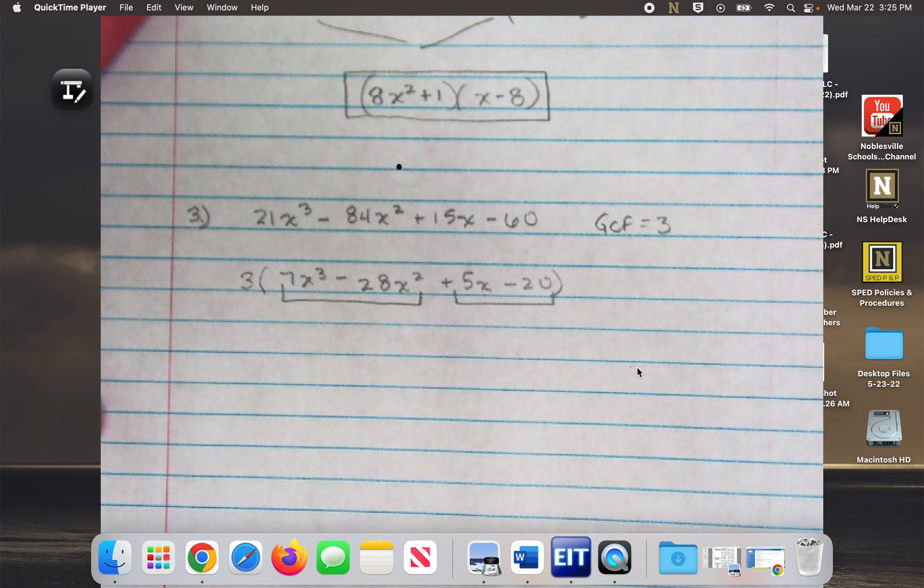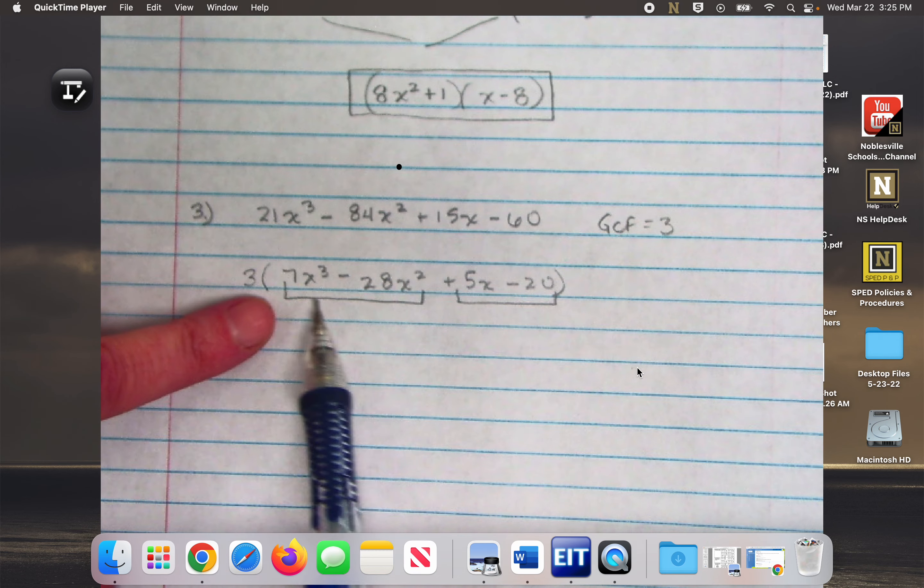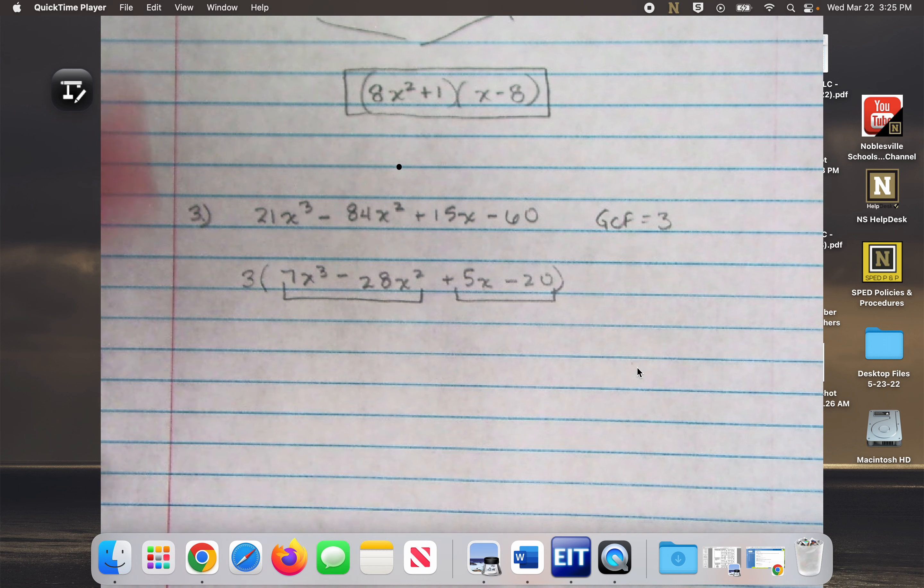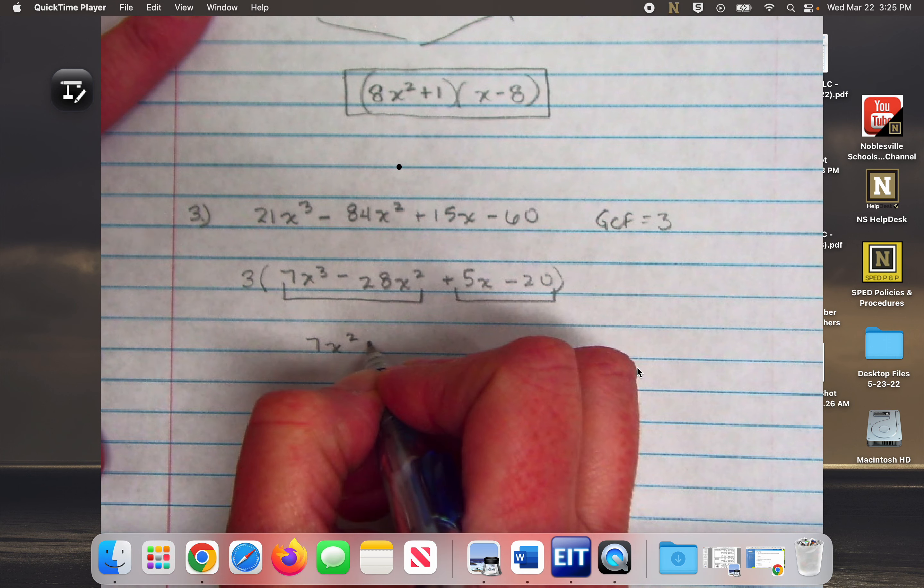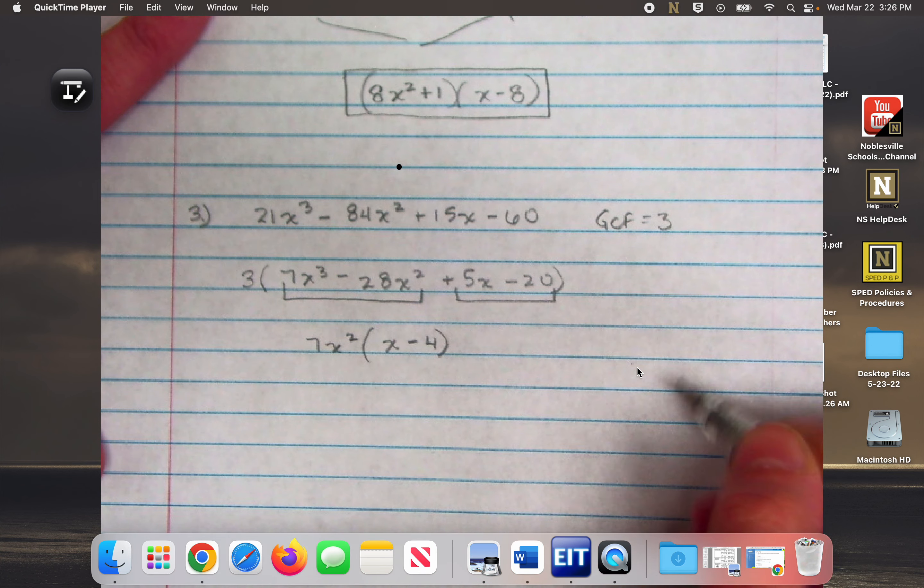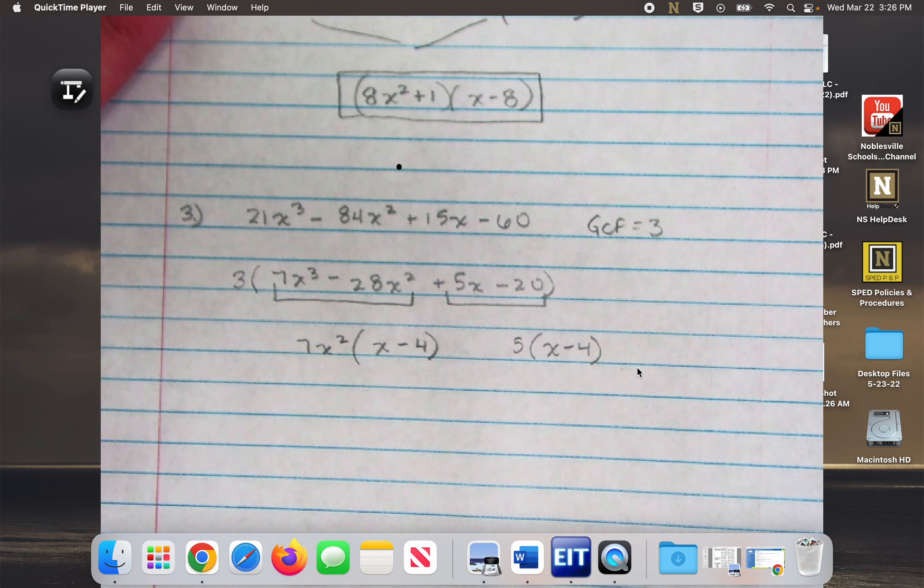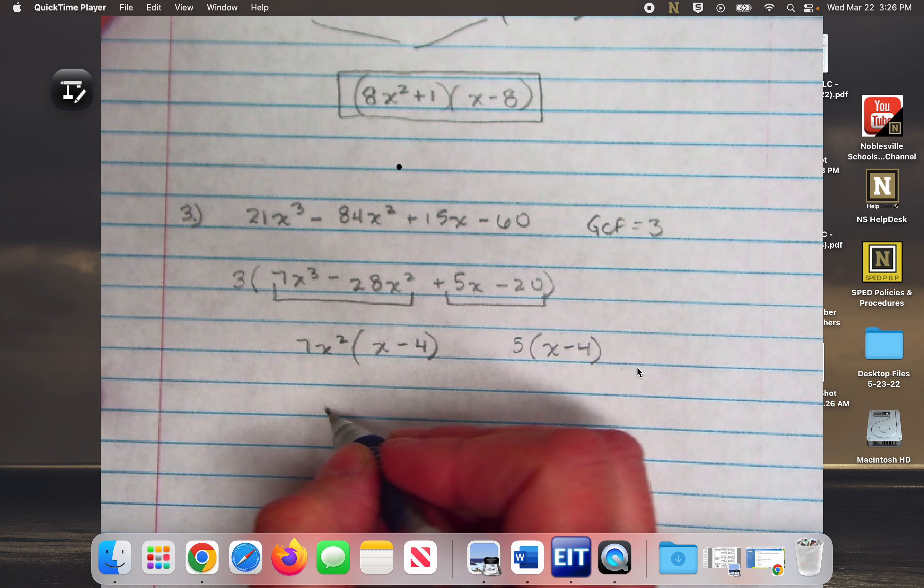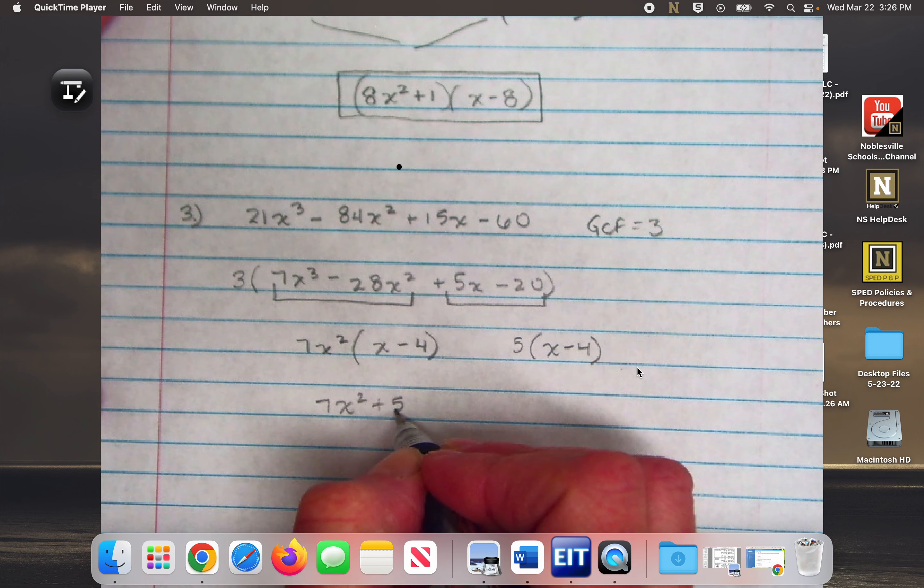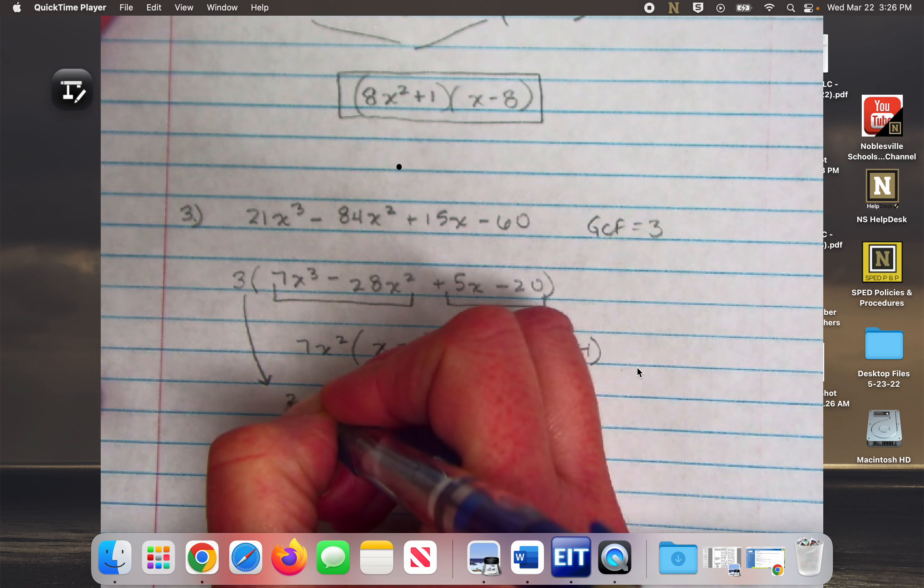So what would be my greatest common factor of 7x to the third minus 28x squared? 7x squared. And I'm going to have x minus 4. And then I would take out 5 times x minus 4. So we're going to have 7x squared plus 5 times x minus 4, and then we have this 3 hanging out as part of the answer as well.